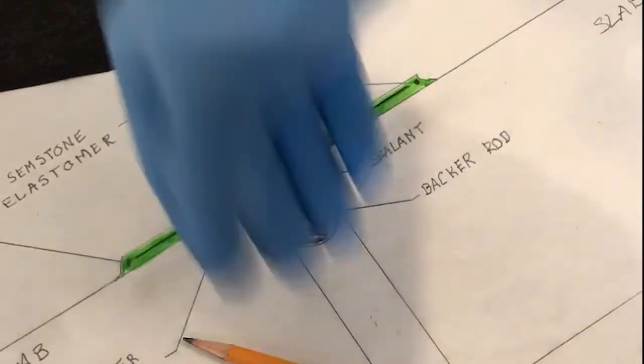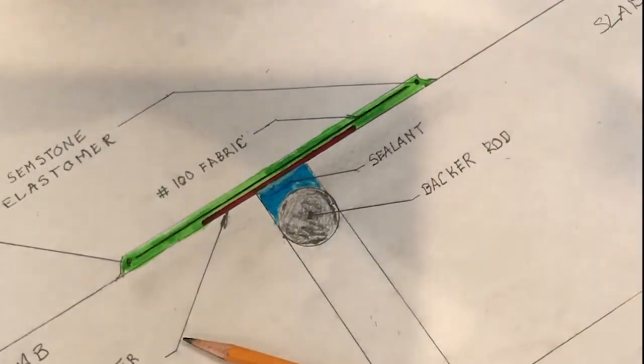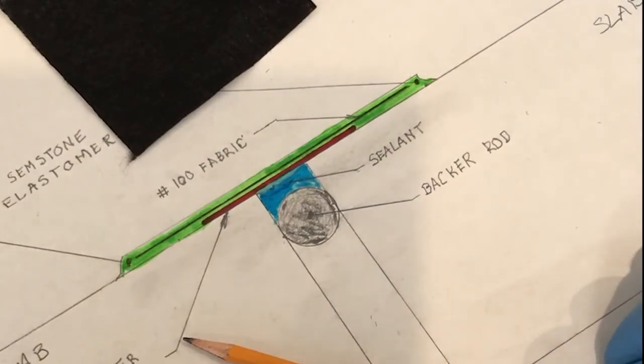Put the tape down, pour out the rubber, embed the fabric into it, and saturate it, and you're done.